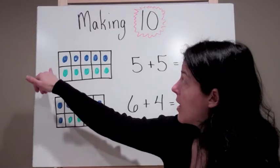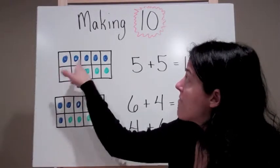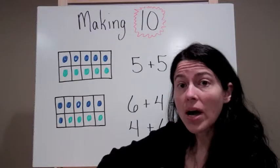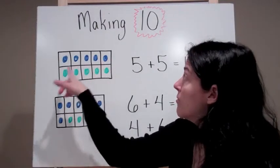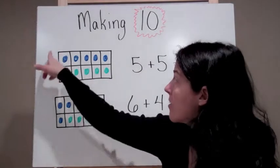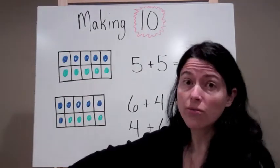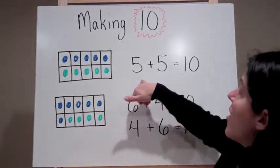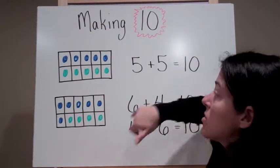So the first tens frame that I have right here, I have 5 blue and I have 5 green. Now I know that by counting up from 5, 6, 7, 8, 9, 10, or the fact that this tens frame is completely full that I've made 10. That helps me to understand that 5 plus 5 equals 10.